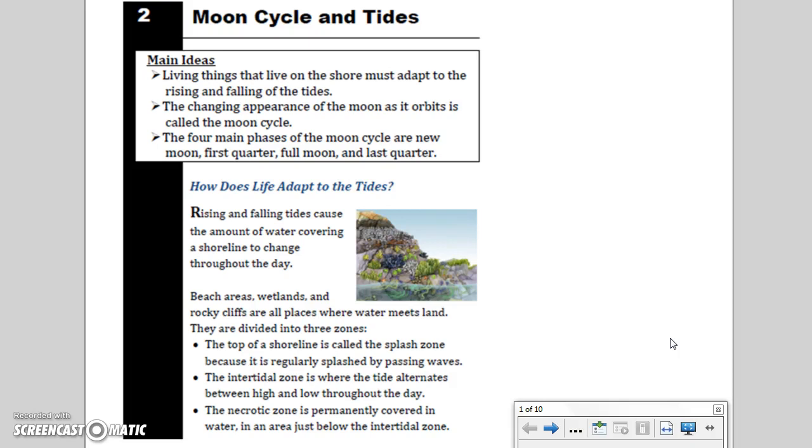How does life adapt to the tides? Rising and falling tides cause the amount of water covering a shoreline to change throughout the day. Beach areas, wetlands, and rocky cliffs are all places where water meets land. They are divided into three zones. The top of a shoreline is called the splash zone because it is regularly splashed by passing waves. The intertidal zone is where the tide alternates between high and low throughout the day. The necrotic zone is permanently covered in water in an area just below the intertidal zone.